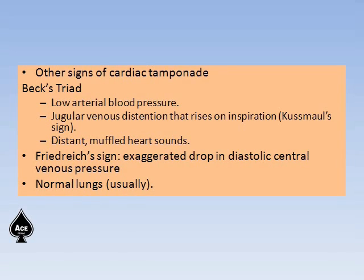Other signs of cardiac tamponade include Beck's triad: low arterial blood pressure, jugular venous distension that rises on inspiration (called Kussmaul's sign), and distant muffled heart sounds. Friedrichs sign shows an exaggerated drop in diastolic central venous pressure, and the lungs are usually normal unless there is concurrent lung disease.